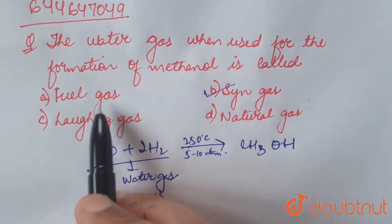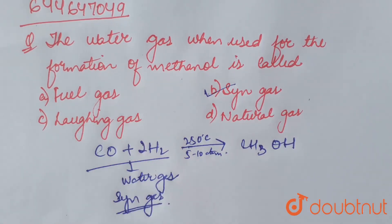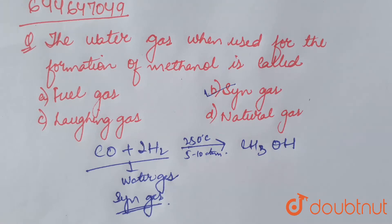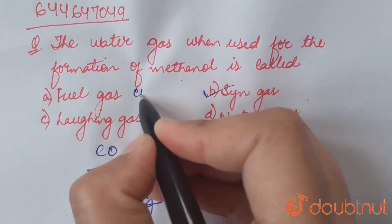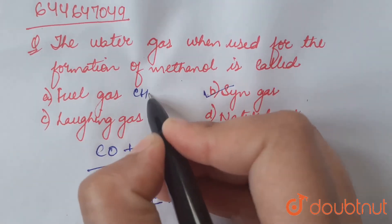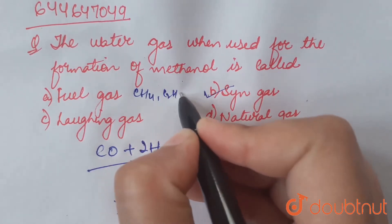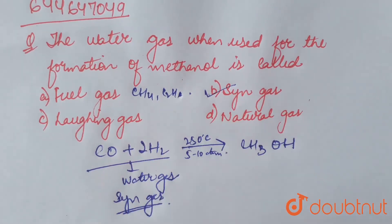Fuel gas: fuel gas refers to any gas that under ordinary conditions is in a gaseous state. Many fuel gases are composed of hydrocarbons, like methane, ethane, etc.